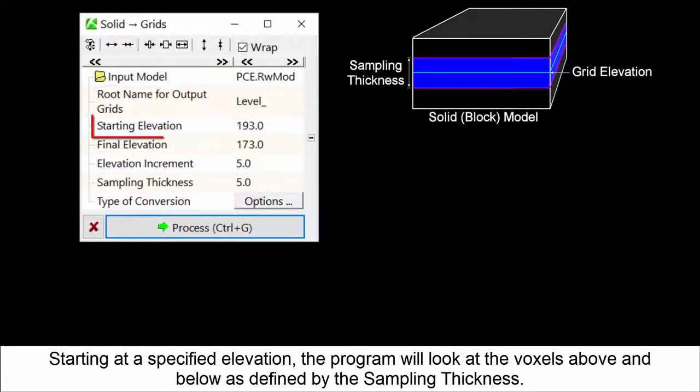Starting at a specified elevation, the program will look at the voxels above and below as defined by the sampling thickness.